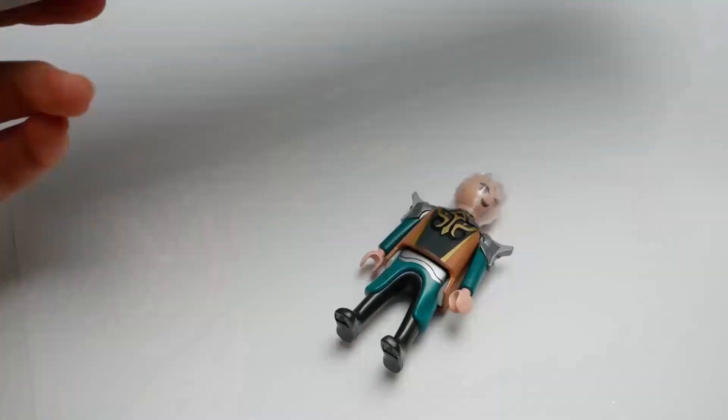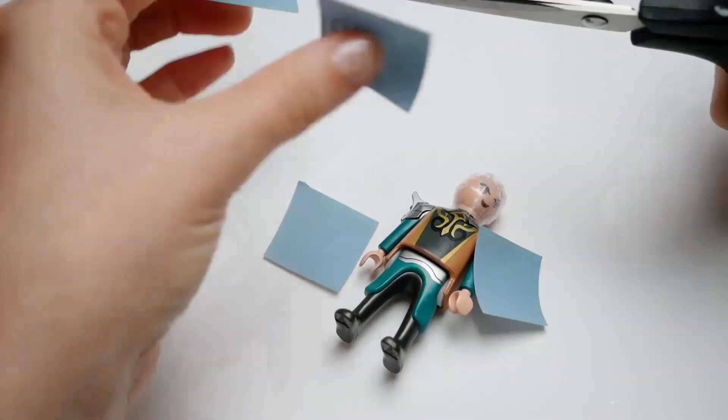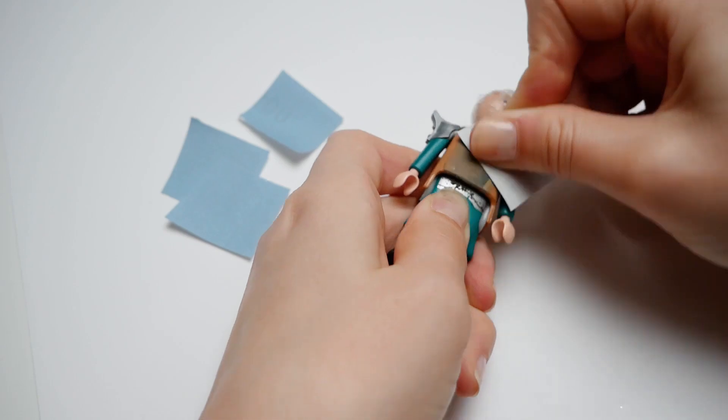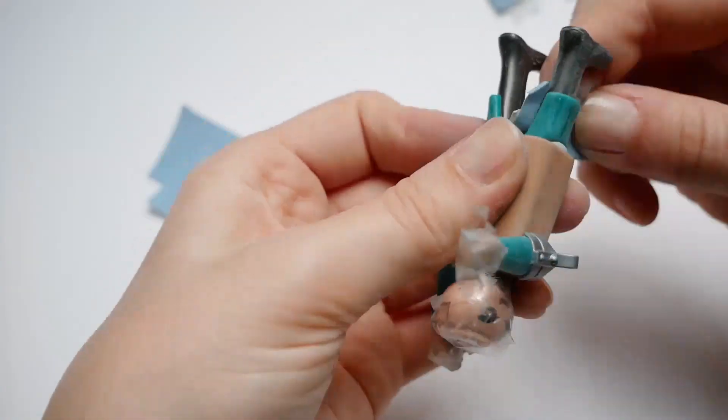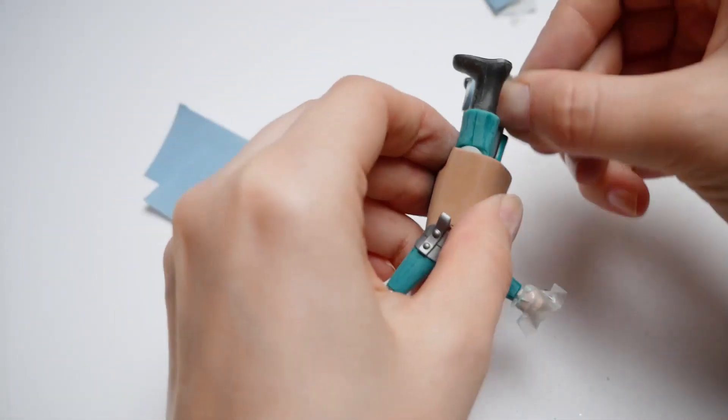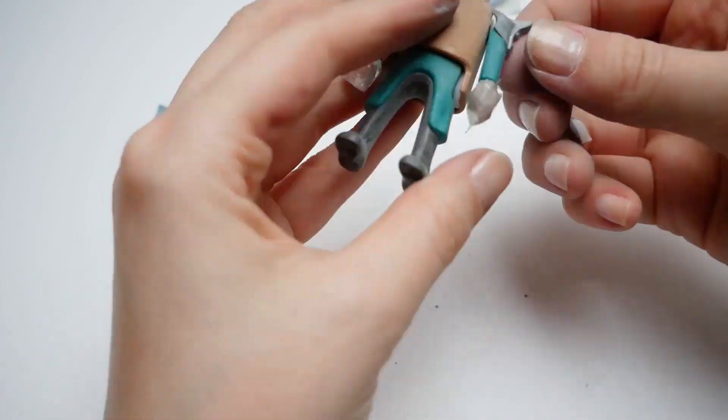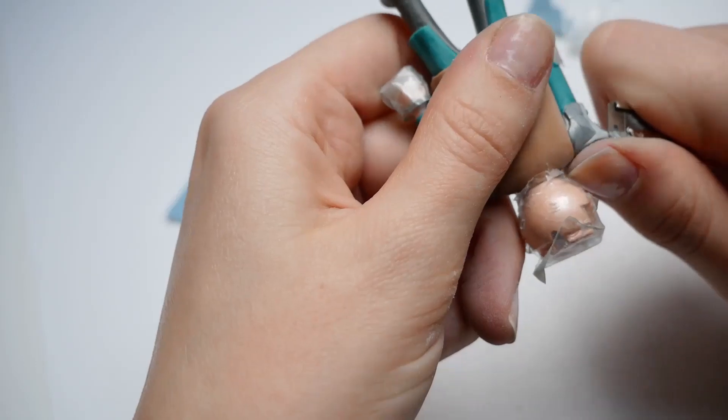Then I'm taking very fine sandpaper, mine has a number P400, and sanding all of the surface of the figurine except his face and hands of course. Since the figurine is very tiny, I found out that it's much more comfortable to use little pieces of sandpaper as well, so I cut it into little rectangles. Sanding is needed to remove the protective varnish from the figurine so epoxy sculpt and acrylic paint will stick to it better.